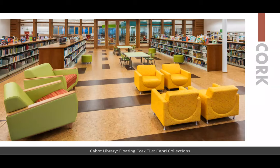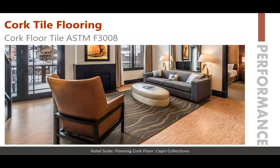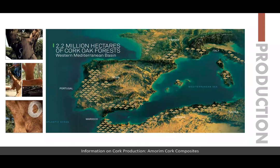Our next section is cork as a resilient flooring type. Cork bark from the cork oak tree is granulated; processing and curing granulated cork with a polyurethane binder, coupled with a polyurethane finish, creates cork tile flooring. The ASTM performance standard is ASTM F3008. Cork oak is the primary source of most cork products in the world, including wine bottle stoppers. These trees grow primarily along the Mediterranean coast — in Portugal, Algeria, Spain, Morocco, France, Italy, and Tunisia — with plenty of sunshine, low rainfall, and high humidity. A cork oak must be at least 25 years old before bark can be harvested, and its cork can then be stripped every 8 to 14 years for the life of the tree.